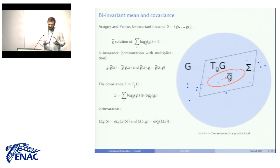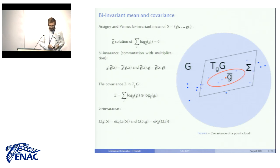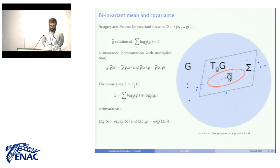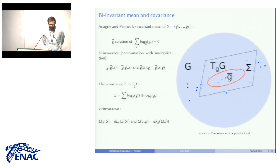With this linearization procedure, we can define mean and covariance. A point Ḡ is called a mean of G_1, …, G_k if the sum of the linearized points from Ḡ using the logarithm at Ḡ is zero. Due to the independence from the choice of left or right multiplication in the definition of the exponential and logarithm at G, this definition of the mean commutes with left and right multiplication by arbitrary elements. The covariance is then defined as the vectorial covariance of the linearized points, and it also commutes with left and right multiplication.